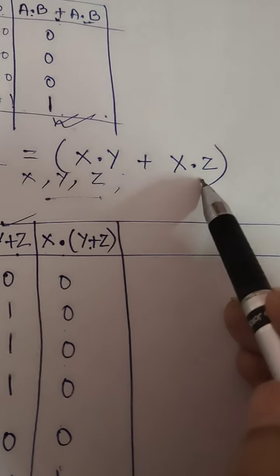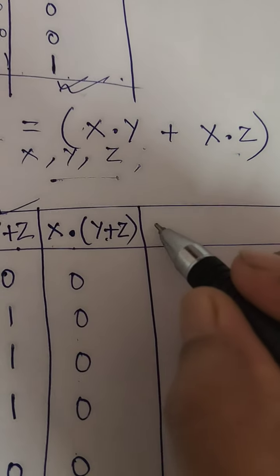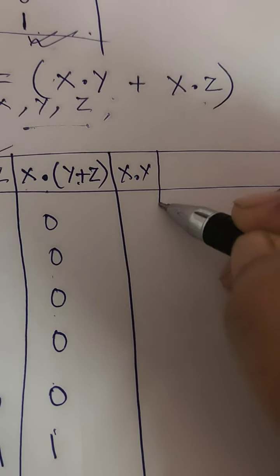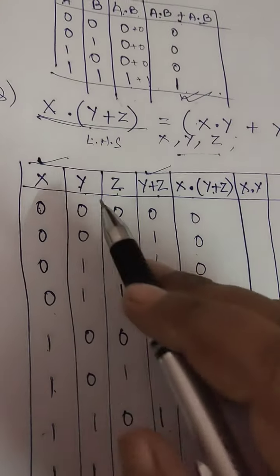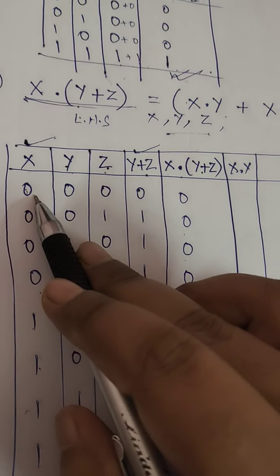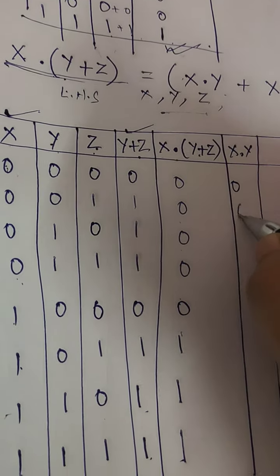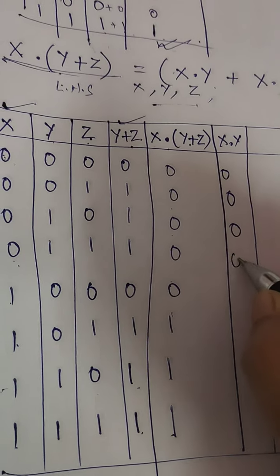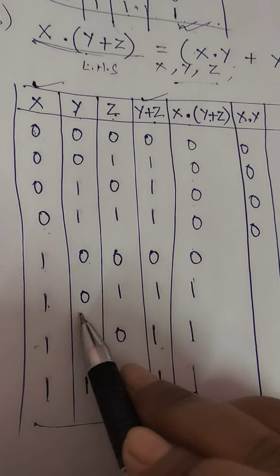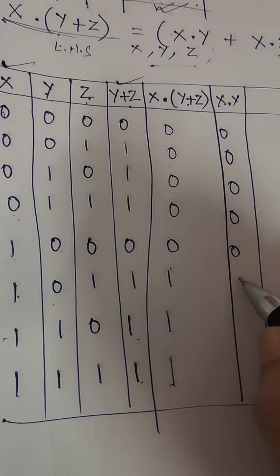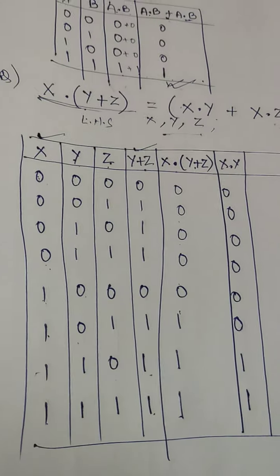Now we'll solve this side. So first what will we do? We'll solve x·y. From here we'll get x·y. Now from these two, as usual, dot means use the AND operator. So the first four will be zero. Here also in x·y, these two will also be zero, but these will be one, one, one, one. Done.